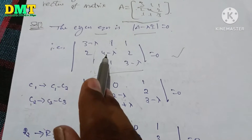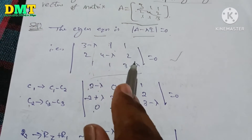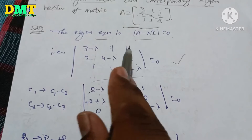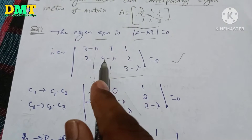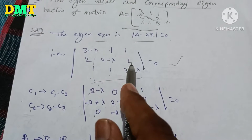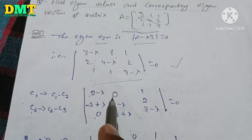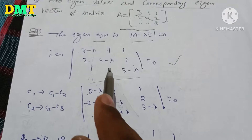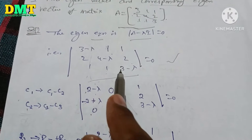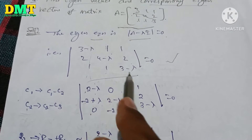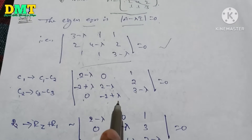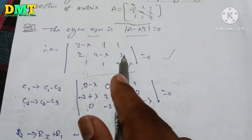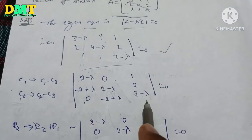Next, column 2 is column 2 minus column 3. 1 minus 1 is 0. 4 minus 2 gives a value. Here, 3 minus 2 gives minus lambda.